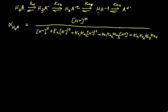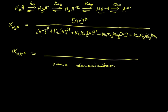Let's choose some other term. Let's choose the next to the last member of the family. The fraction in the A3 minus form would be the same denominator. And it's the next to the last term. So this would be the term KA1 KA2 KA3 times H plus for the numerator. It's a very powerful tool to be able to calculate these fractions at any given pH.